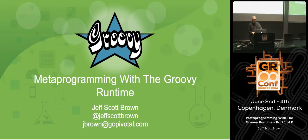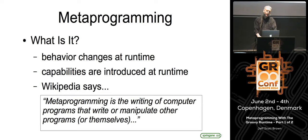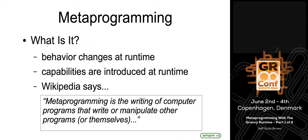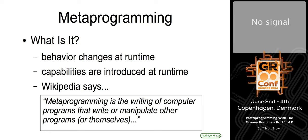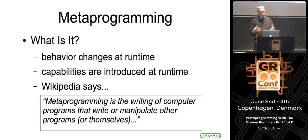Let's start by agreeing on what metaprogramming is — at least the kind I'm going to talk about today. Metaprogramming is one of those words that means different things in different contexts. The kind I'm going to discuss is changing the behavior of your program at runtime. In dynamic languages like Groovy, you can add methods to classes while your program is running, replace existing methods, and change the behavior of code while your application is running.